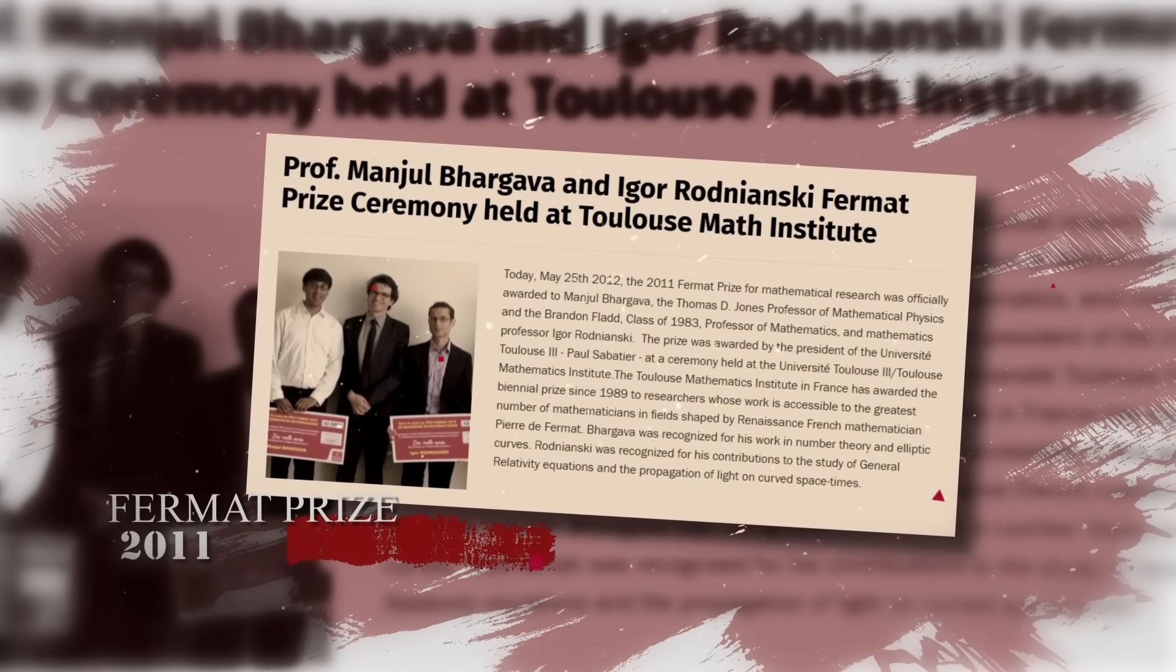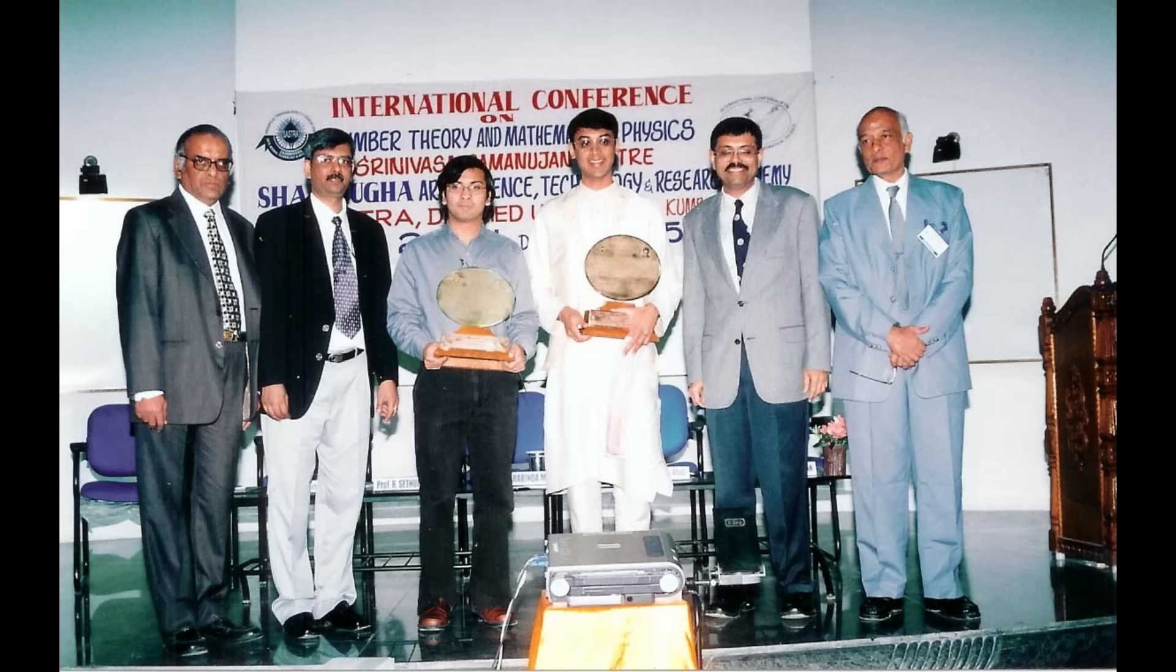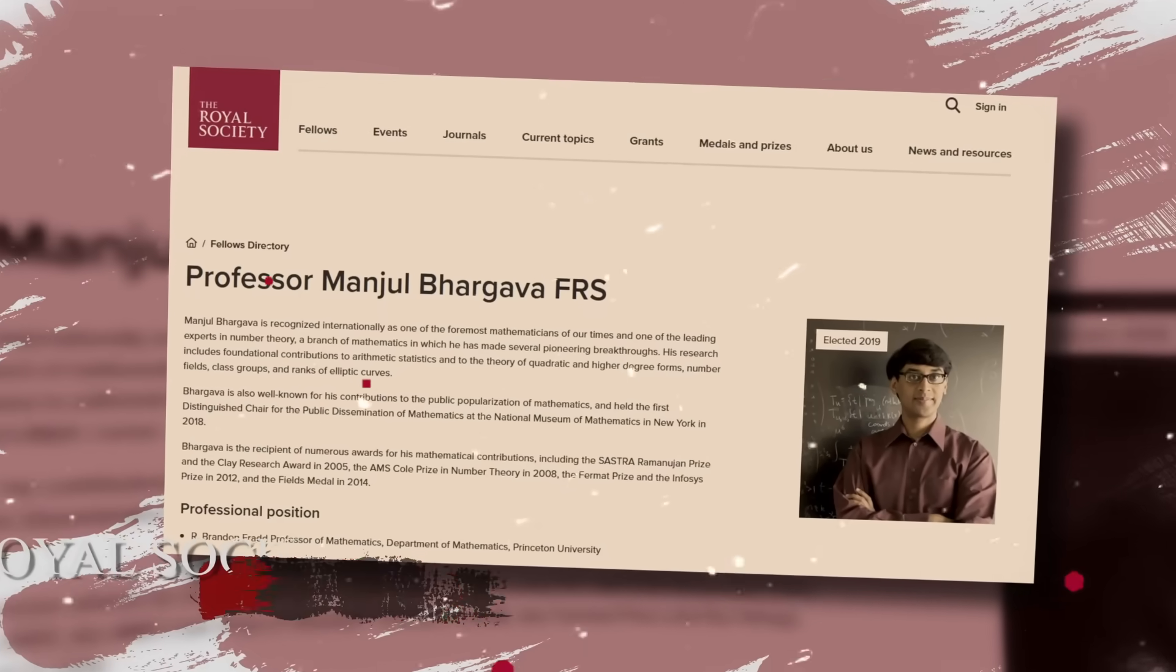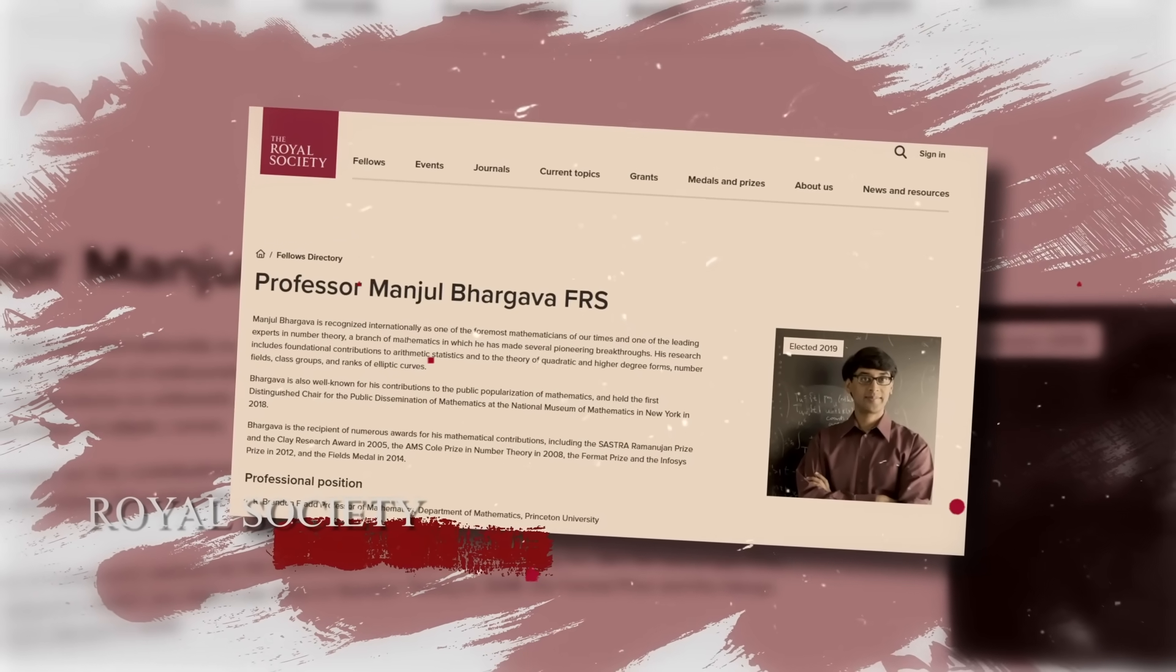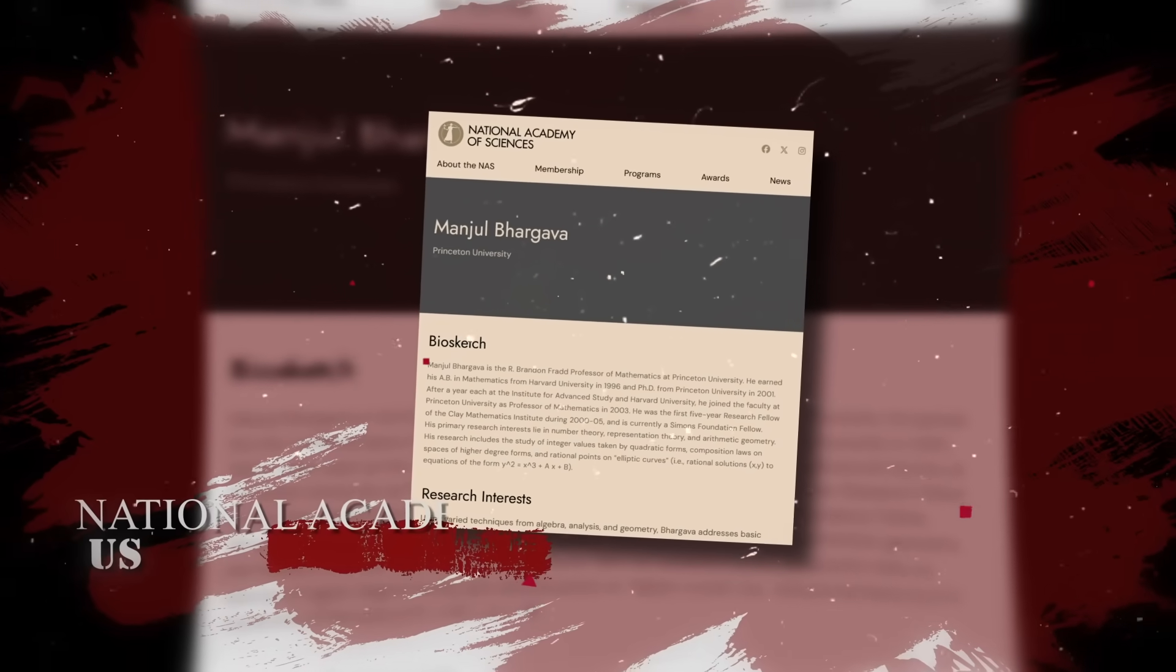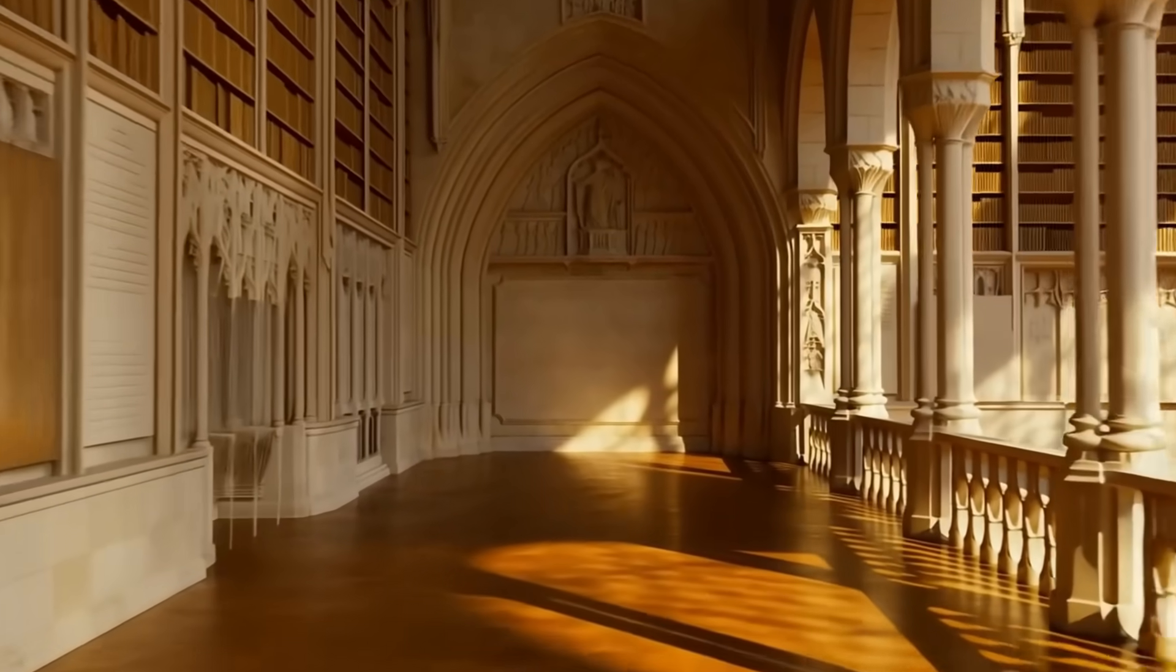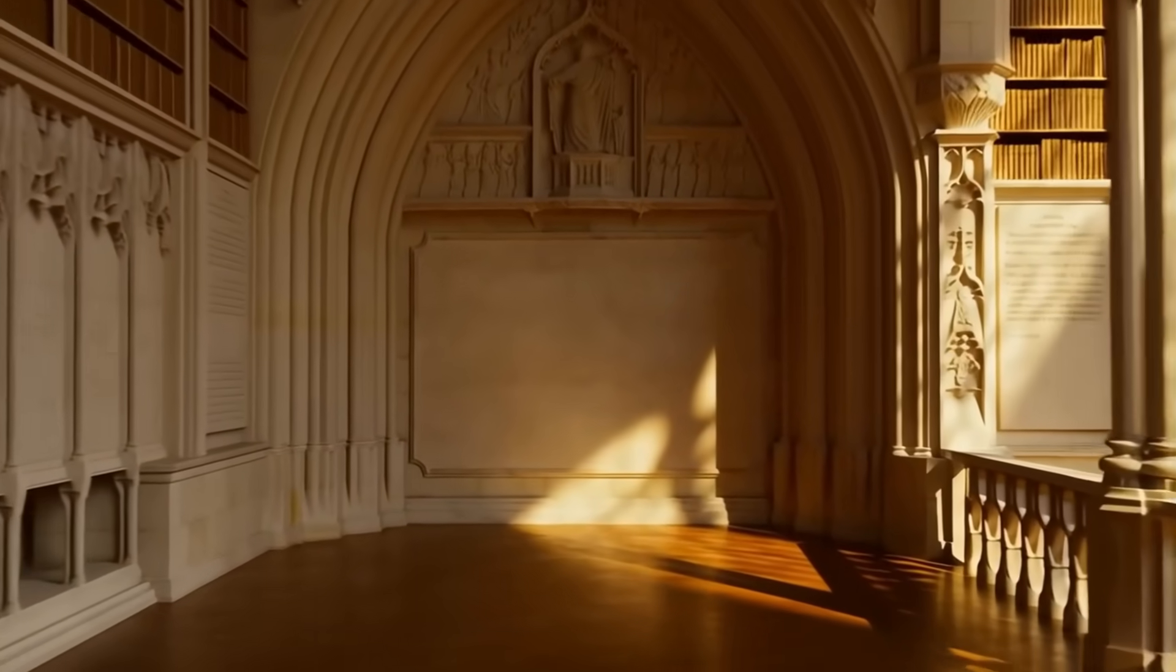The Fermat Prize. The Infosys Prize. The Cole Prize in Number Theory. The Sastra Ramanujan Prize. The Clay Research Award. Each one represented not just a stamp of approval, but a recognition that his ideas had changed how mathematicians think. And honors followed from the scientific world at large. Election to the Royal Society. Membership in the US National Academy of Sciences. Institutions that had existed for centuries. Institutions that had welcomed giants now carved his name among them.